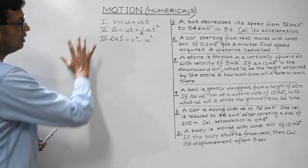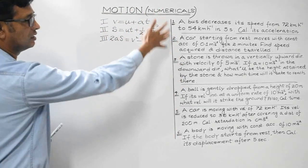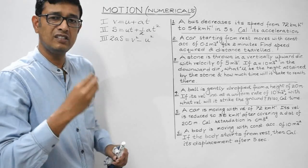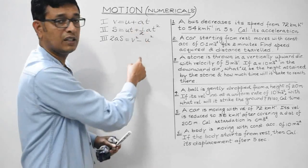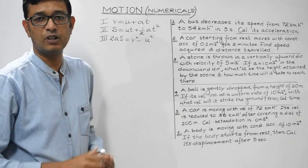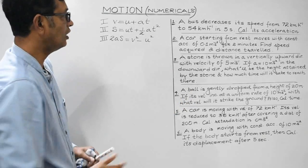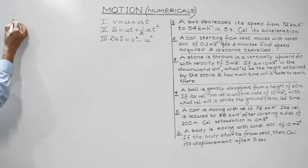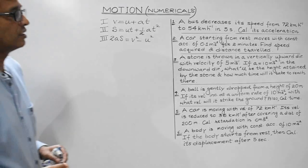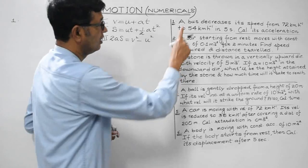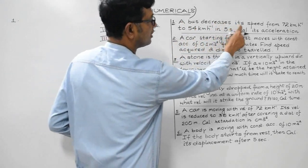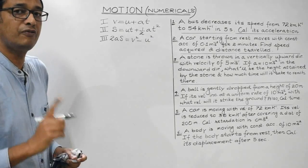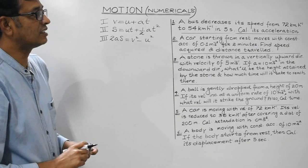All the questions here are based on equations of motion. We just need to choose the appropriate equation for each numerical. The first question: a bus decreases its speed from 72 km/h to 54 km/h in 5 seconds. Calculate its acceleration.